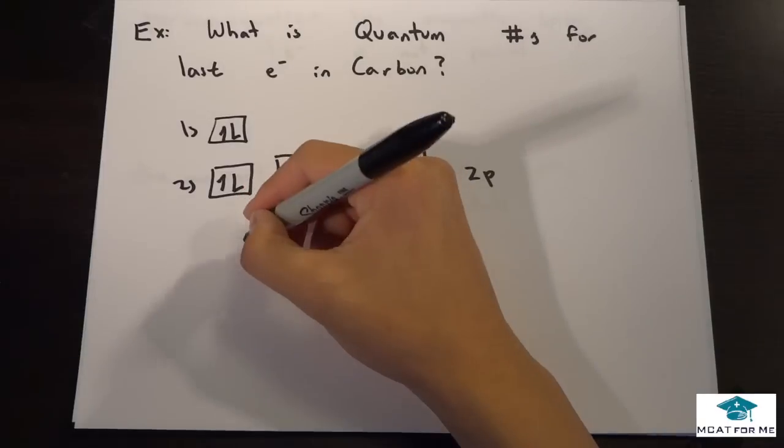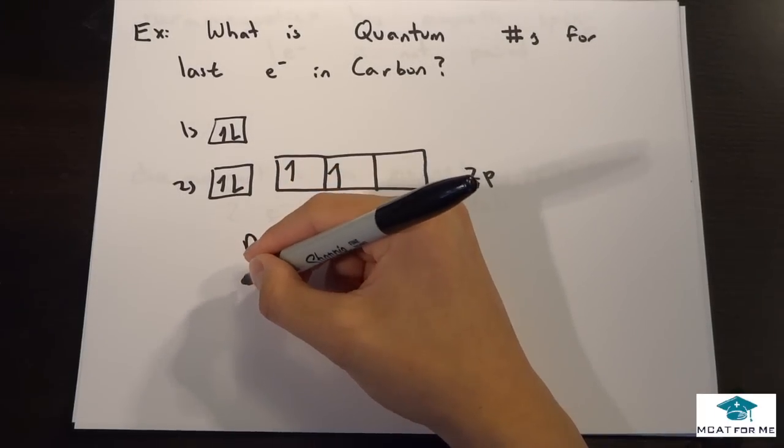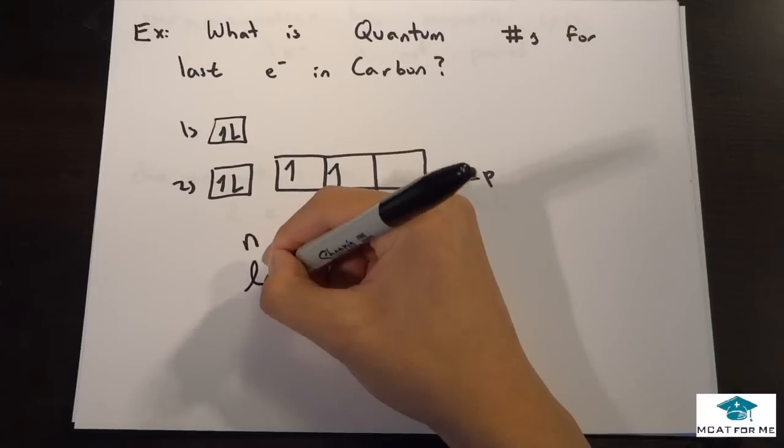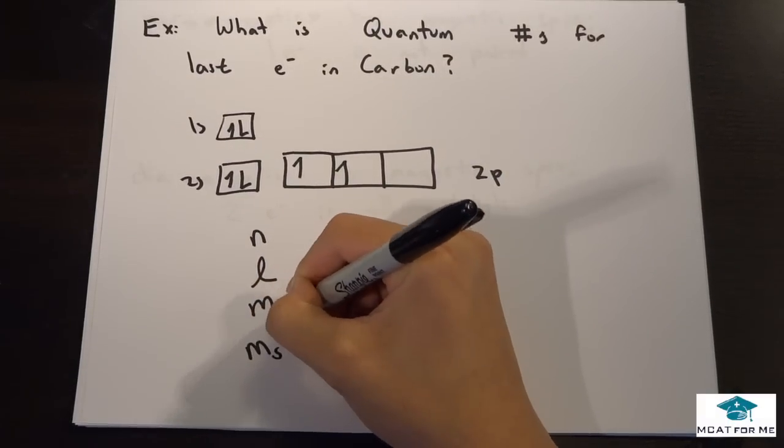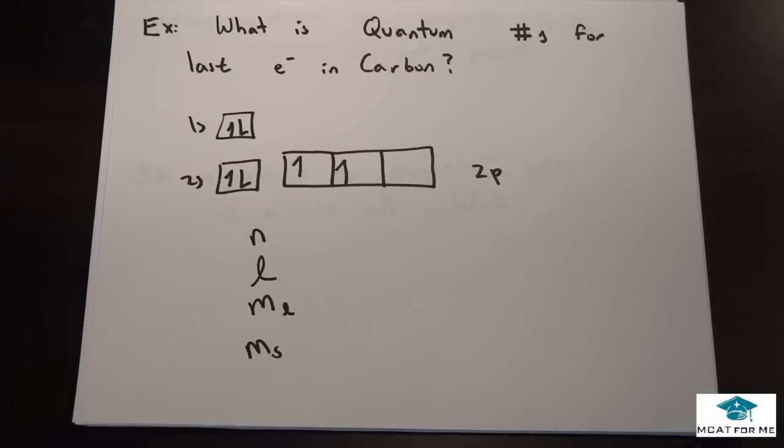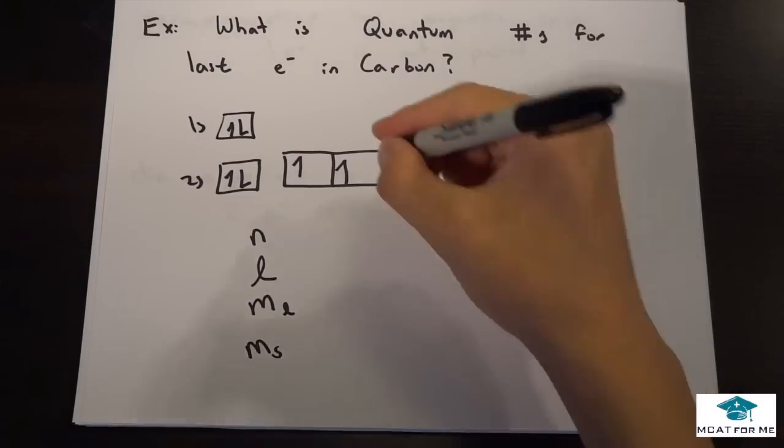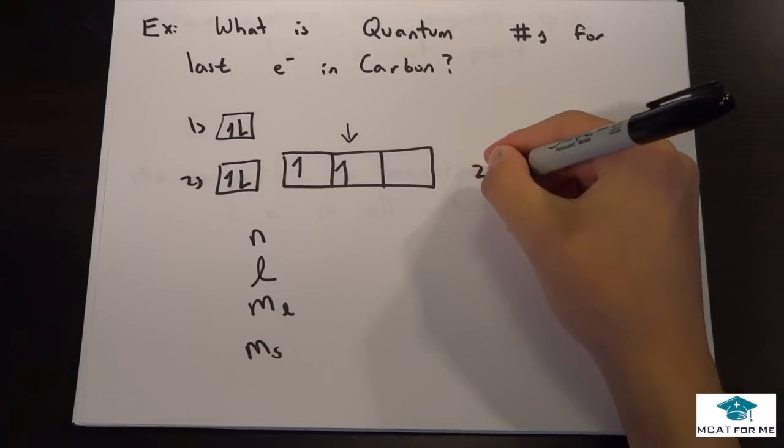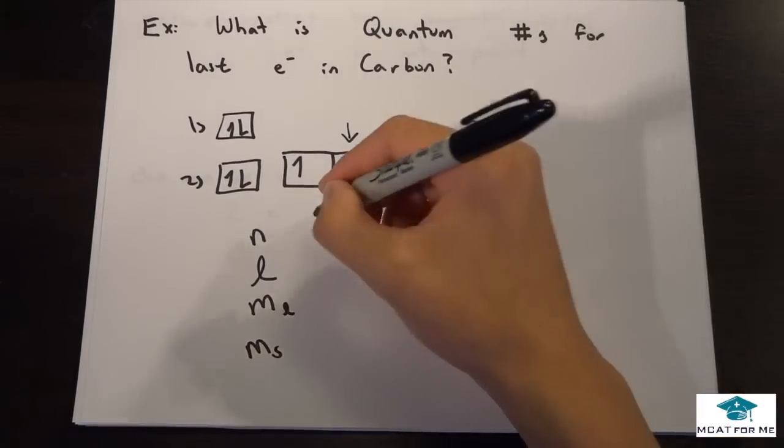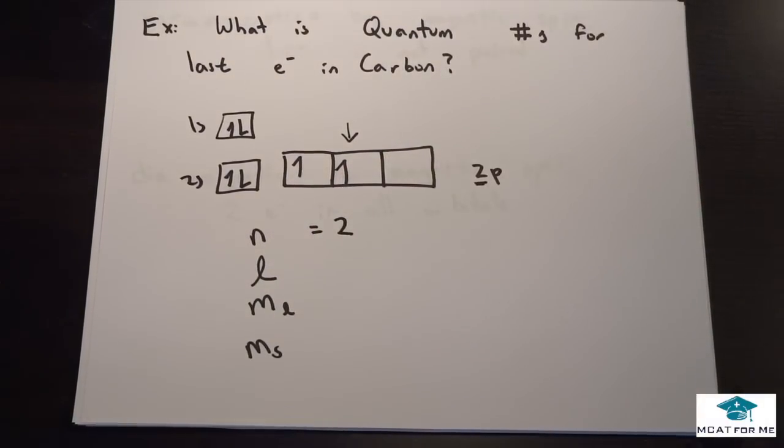So now let's just do our quantum numbers: N, then we have L, then we have M, then we have Ms, and sometimes they put a little ML underneath. So what they want to ask is what are the quantum numbers for that electron right there. So the quantum numbers for that is, well N would be, well it's 2p, right, so we would take that 2. N will be 2, L.